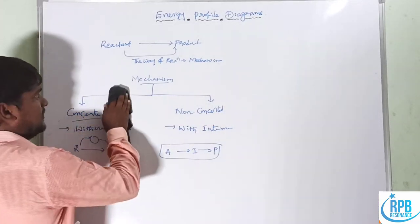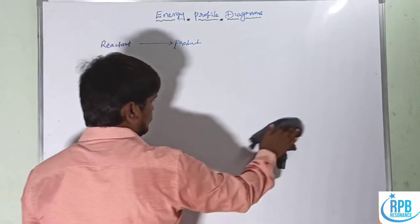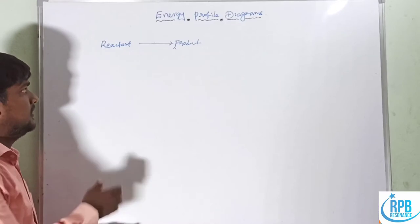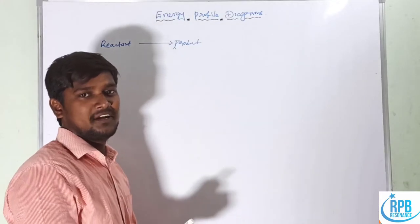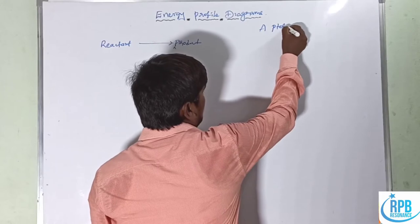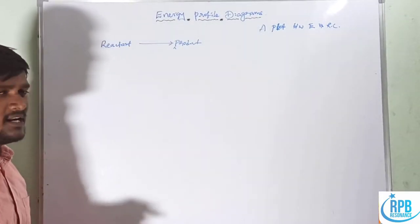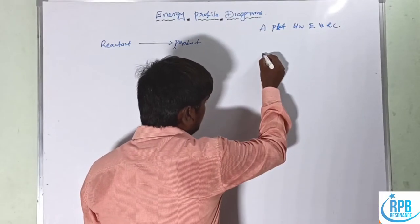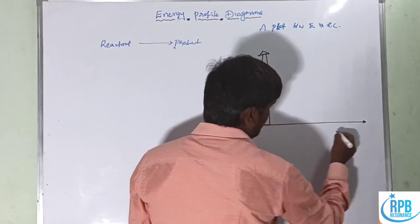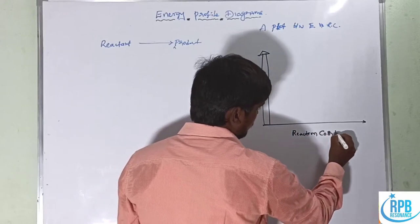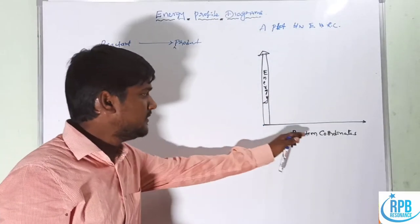Now let us move on to energy profile diagrams in organic reactions. An energy profile is a plot between energy versus reaction coordinates. Energy is taken on the y-axis and reaction coordinates on the x-axis.